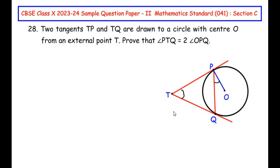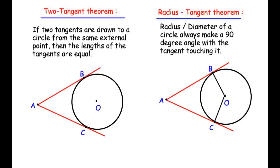To prove this we need two very important circle theorems. The first one is the two tangent theorem, which states that if two tangents are drawn to a circle from the same external point, then the lengths of the tangents are equal.